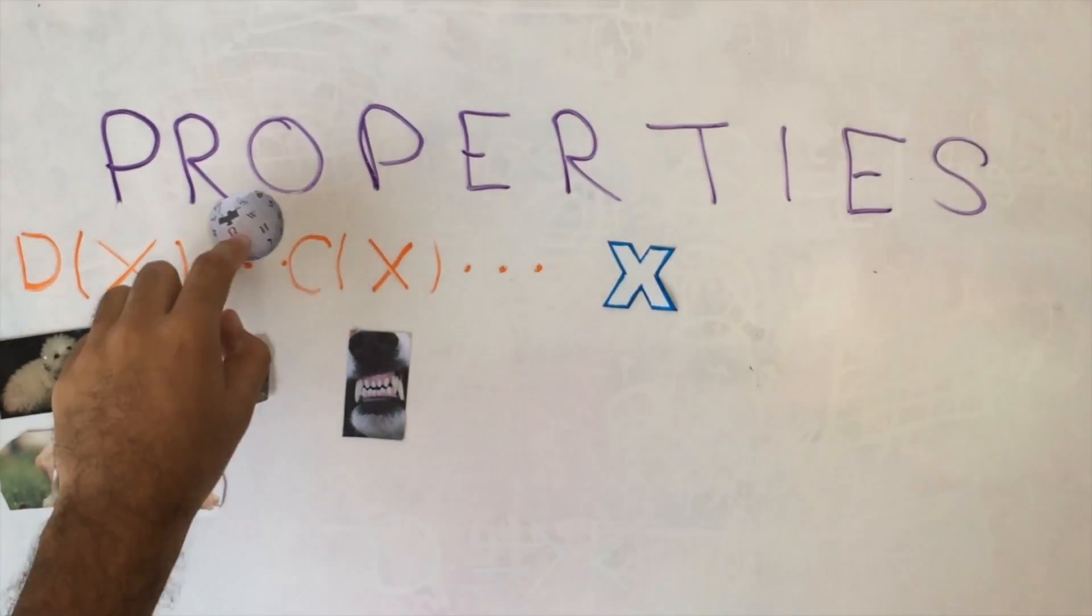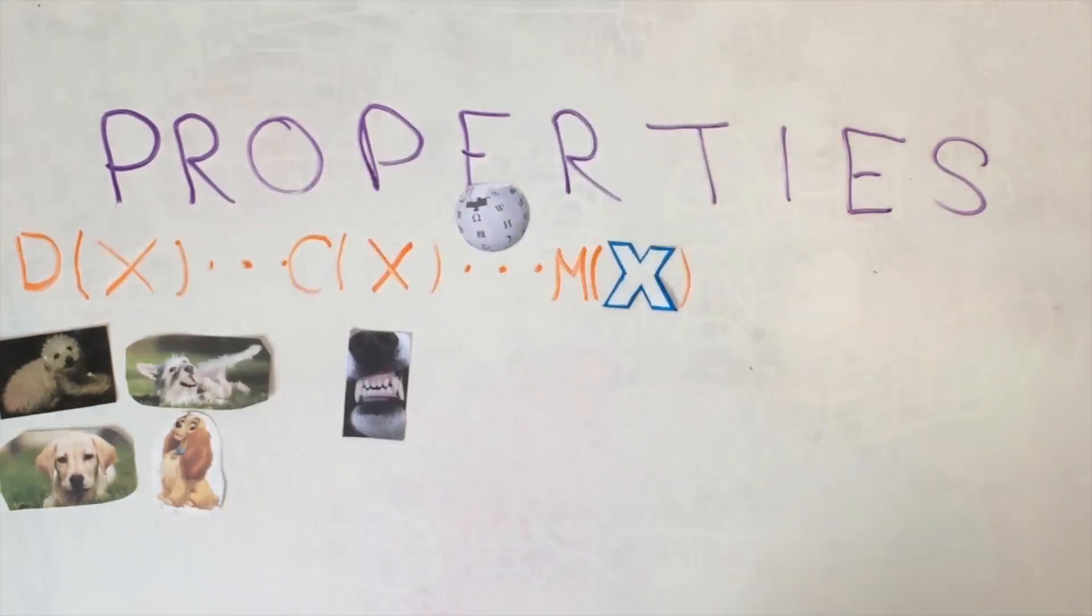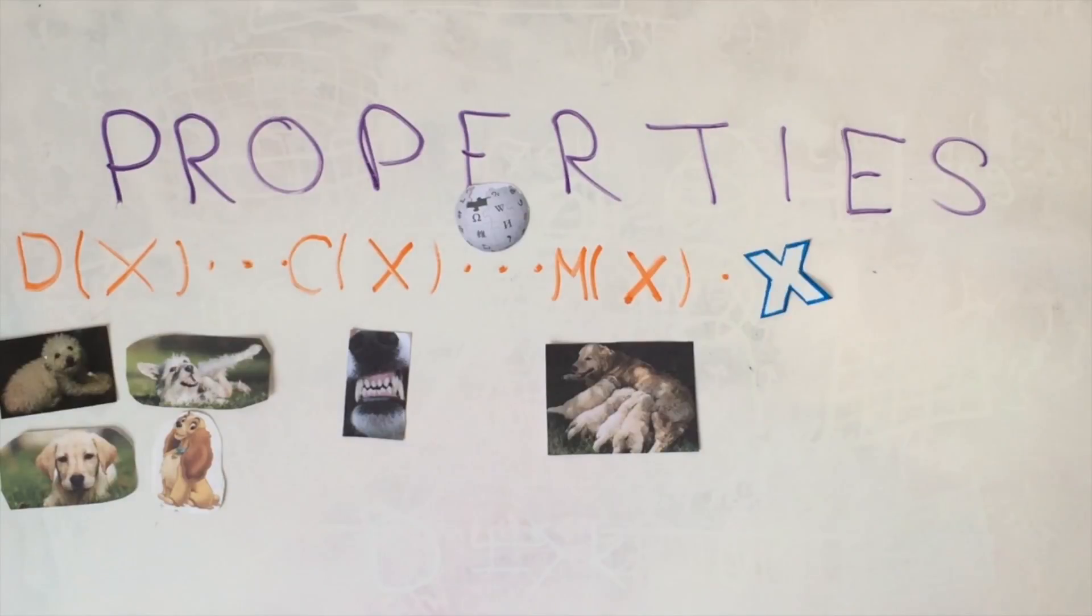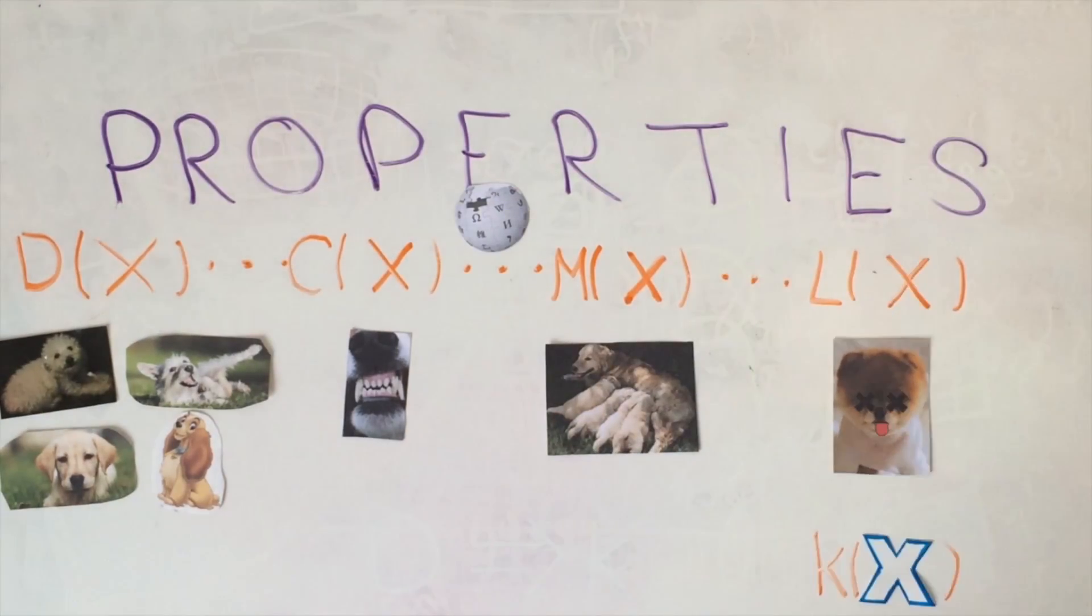If X is a canine, then that very same encyclopedia tells you that X is a mammal. Given this, X is a living being, and therefore, X can kick the bucket.